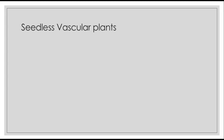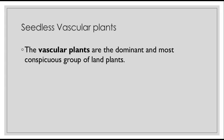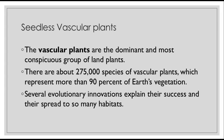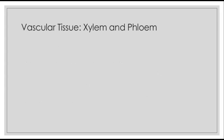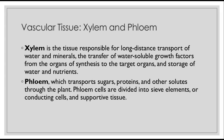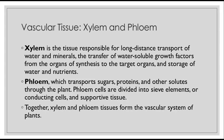Now we get into the seedless vascular plants. Vascular plants are the dominant and most conspicuous group of land plants, with about 275,000 species representing more than 90% of Earth's vegetation. Several evolutionary innovations explain their success. The first is vascular tissue — the xylem and the phloem. Xylem is responsible for long-distance transport of water and minerals up to the leaves. Phloem transports sugars, proteins, and other solutes down from the leaves to the roots. Together, xylem and phloem form the vascular system of plants.